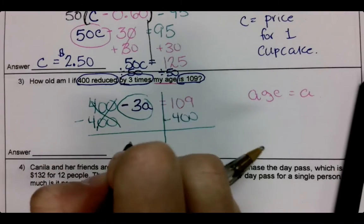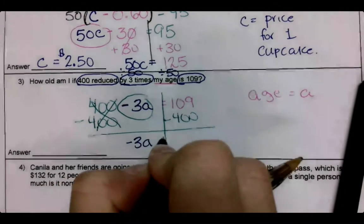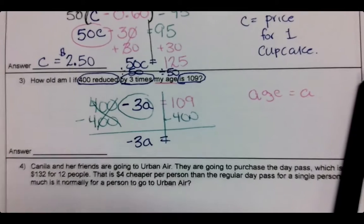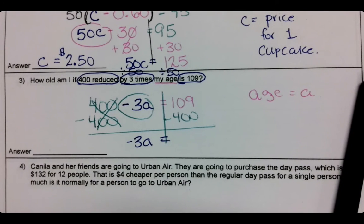We have negative 3a. And then 109 minus 400 should be 291, I believe. Negative.